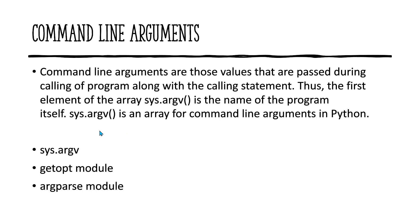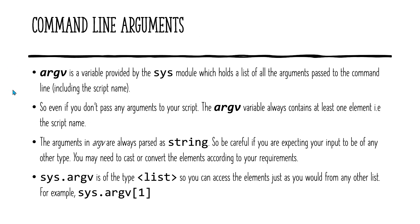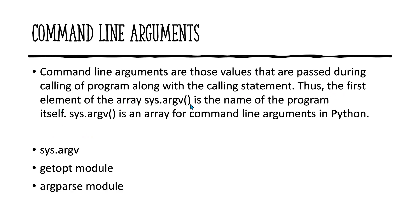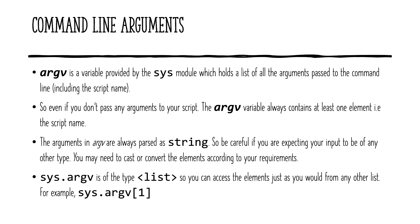Let's look at a few definitions about sys.argv. argv means argument value — in short form we call it argv. It's a variable provided by the sys module which holds a list of all arguments passed to the command line, including the script name. Even if you don't pass any argument to the script, the argv variable always contains at least one element — the script name. The arguments in argv are always passed as strings, so if you need to convert to another type, you have to typecast it.